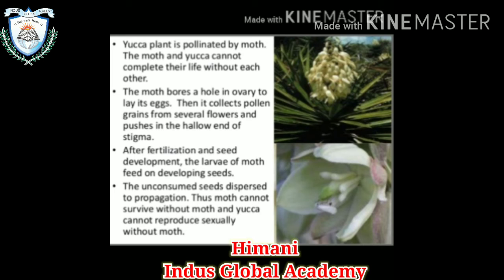The yucca plant is pollinated by the moth, and the moth and the yucca cannot complete their life cycle without each other — both depend on each other directly or indirectly. The moth bores a hole in the ovary to lay its egg, then collects pollen grains from several flowers and pushes them into the hollow end of the stigma. After fertilization, seed development occurs and the larvae of the moth feed on the developing seeds. The unconsumed seeds disperse for propagation. Thus, the moth cannot survive without yucca and yucca cannot reproduce sexually without the moth.